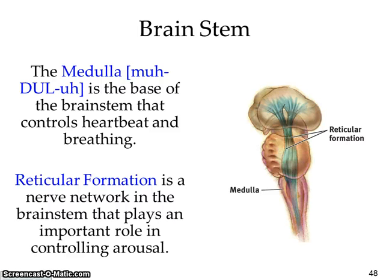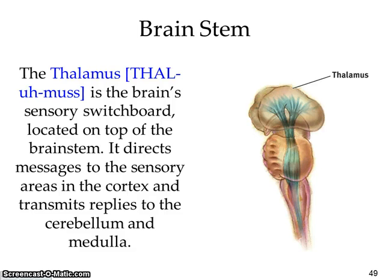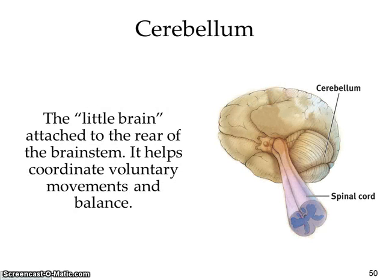The reticular formation deals with arousal — what makes you tick. The thalamus is the brain's sensory switchboard, located on top of the brain stem, routing messages — like an old-fashioned telephone operator switching calls. The cerebellum is the 'little brain' at the rear of the brain stem, dealing with voluntary movements and balance.